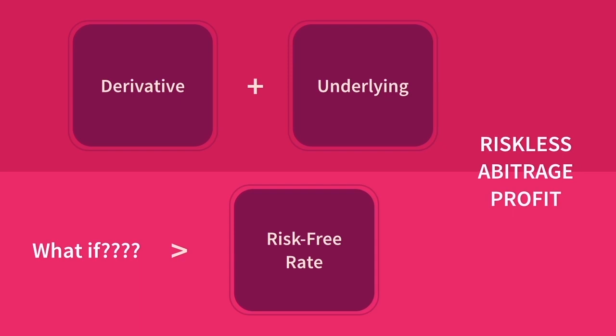While such an opportunity exists, arbitrageurs will exploit it to the extent that the price of the derivative and the underlying will be forced back into equilibrium. The presence of arbitrage in the market has therefore moved the derivative's price.